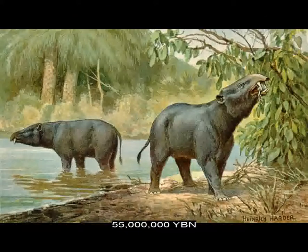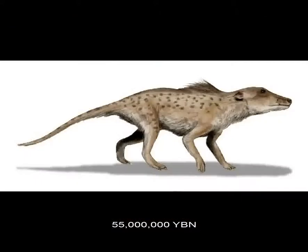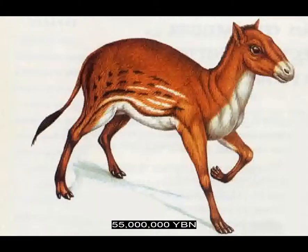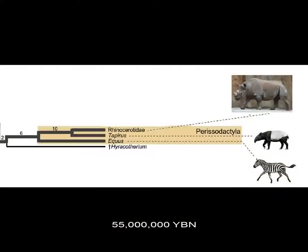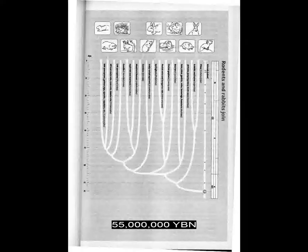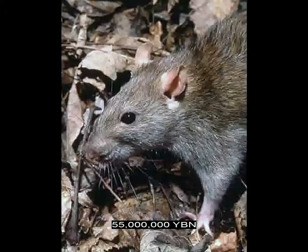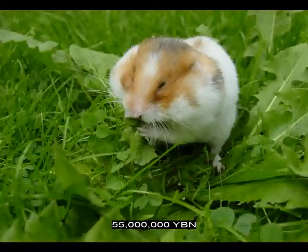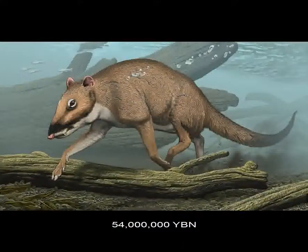Afrotheres, elephants. Laurasiatheria Cetartiodactyla evolve — ancestor of all Artiodactyla: camels, pigs, ruminants, hippos, and all Cetacea — whales, dolphins. Laurasiatheria Perissodactyla — horses, tapirs, rhinos. Rodents evolve — Myomorpha: rats, mice, gerbils, voles, lemmings, hamsters. Last common ancestor between hippos and dolphins and whales.